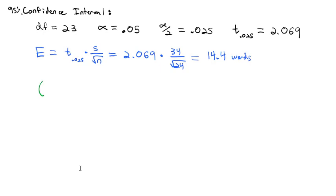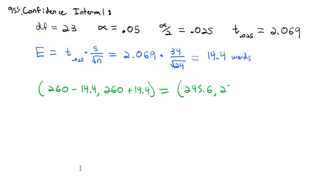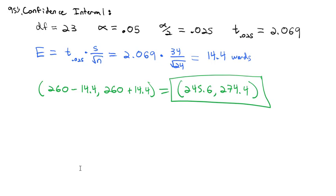For our confidence interval, we subtract and add that error to our sample mean of 260. Subtracting 14.4 gives the low end, and adding 14.4 gives the high end. Our confidence interval is 245.6 through 274.4. Notice the hypothesized mean of 275 is outside that confidence interval, which is related to why we ended up rejecting the null hypothesis.